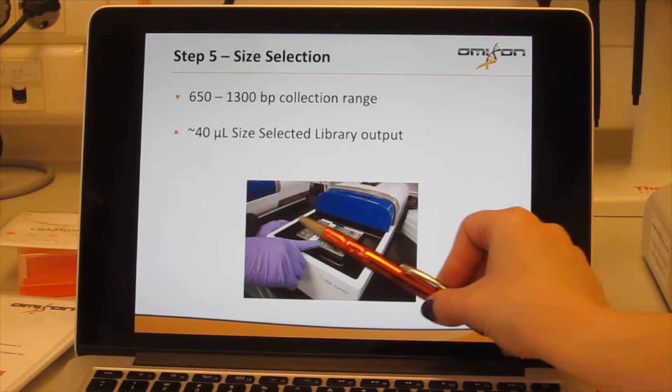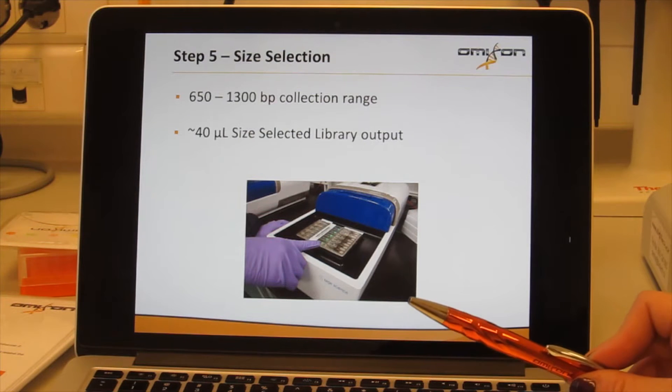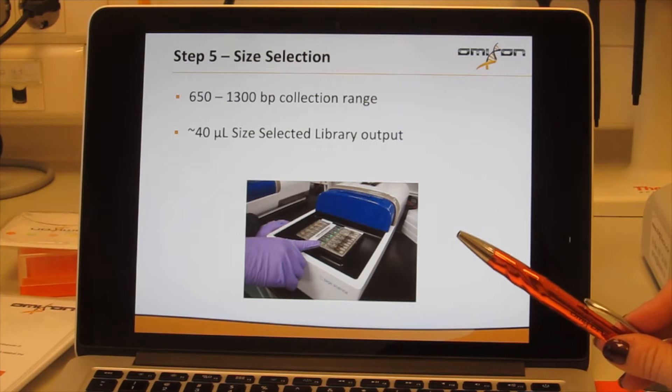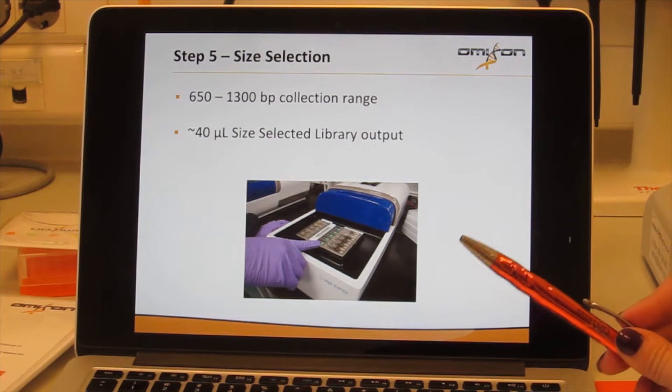The machine uses these plastic cassettes that look exactly like this in the picture. Each cassette has five lanes. We only use one lane per run, but the cassettes are reusable and you can actually use the rest of the lanes at a different time. There is no limitation, so there is no waste.